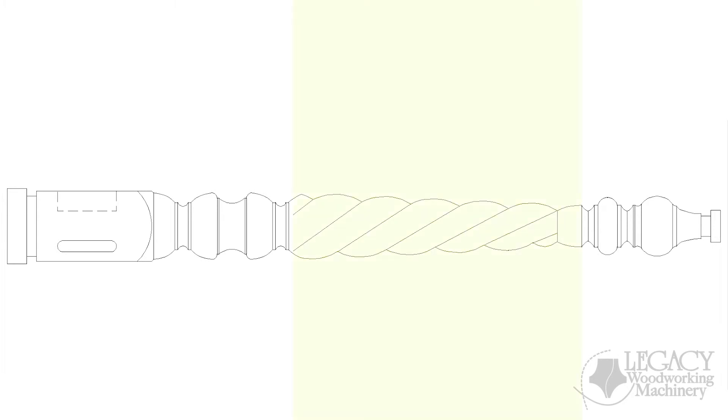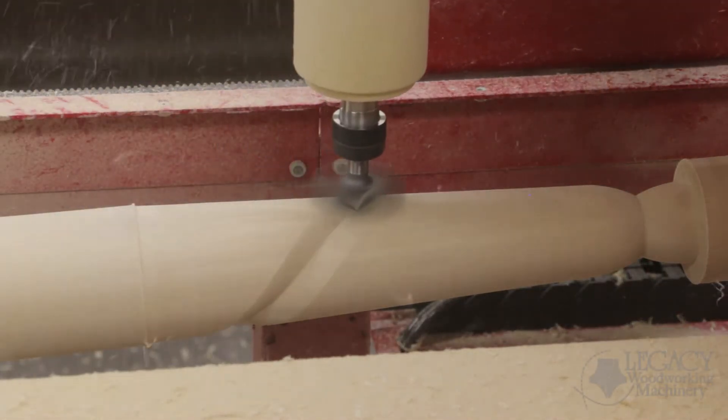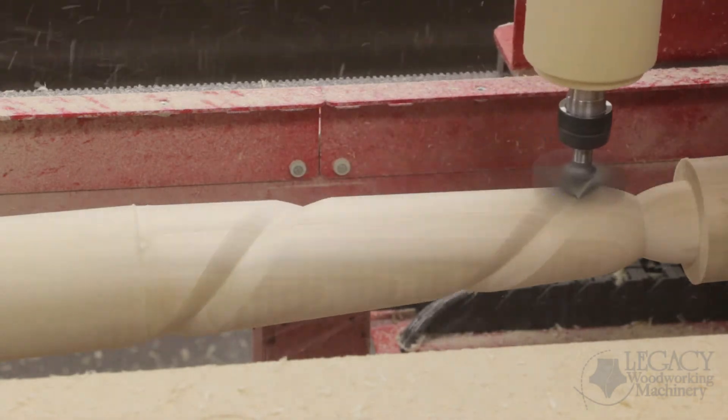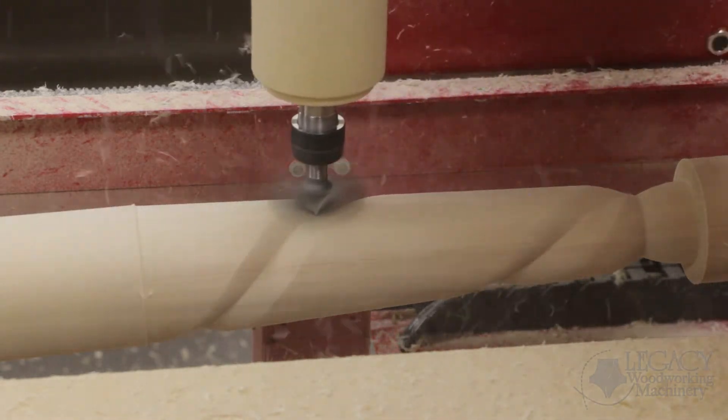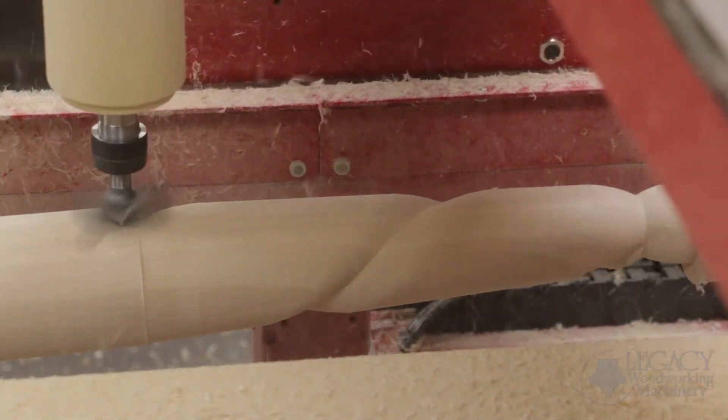Then we have spiraling. These tool paths are created in this section. They synchronize the rotation of the stock with the cutter movement along the length of the part.